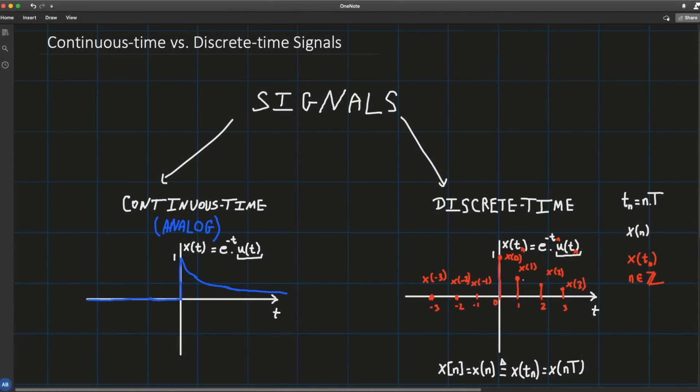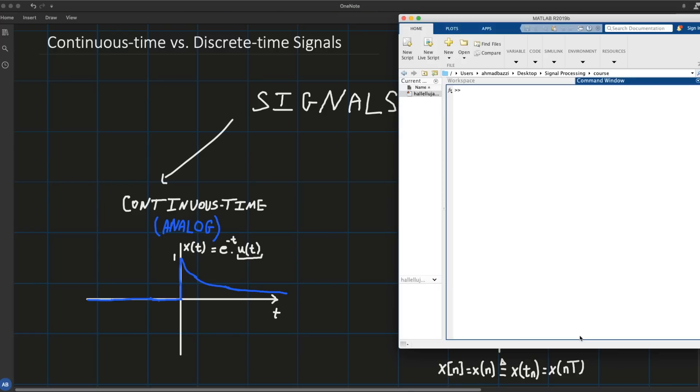Now by selecting those values or by selecting values from an analog signal, this process has a name and it's called sampling. So you're actually sampling, picking samples from your continuous signal. We will talk about sampling in more details in the coming lectures. For the moment you should keep in mind that sampling is just the process of picking samples from a continuous or an analog signal, and all the measurements done are done at regular intervals of time.